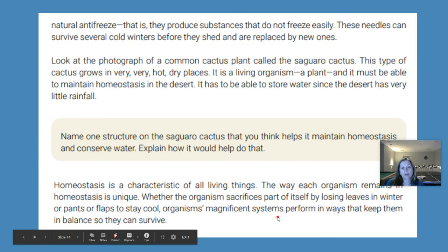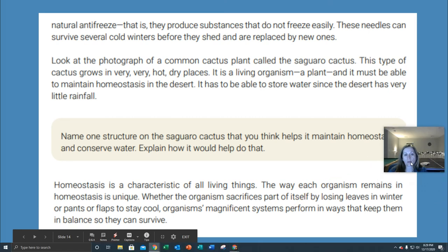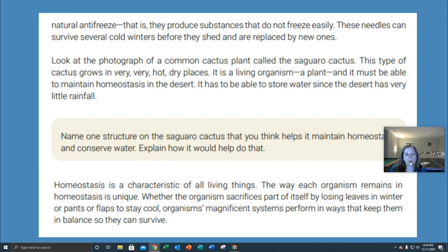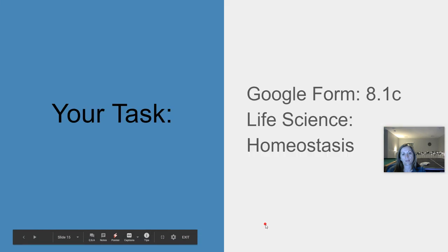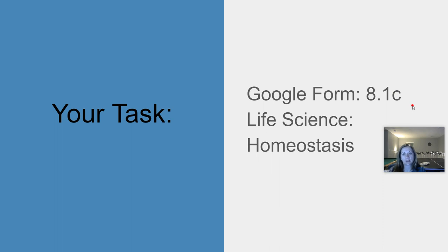Homeostasis is a characteristic of all living things. The way each organism remains in homeostasis is unique. Whether the organism sacrifices part of itself by losing leaves in winter, pants, or flaps to stay cool, organisms' magnificent systems perform in ways that keep them in balance so they can survive. Your job is to complete Google Form 8.1c. I did post these slides under your resources in Google Classroom, so you may open them back up and look up answers — I encourage you to do that. Please complete the Google Form and then you're all done with your science for today. Have a great day, and I will see you tomorrow.